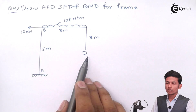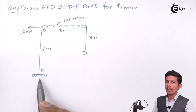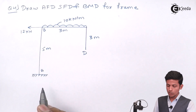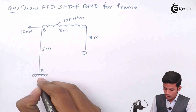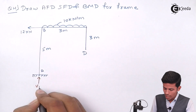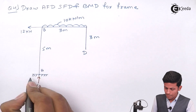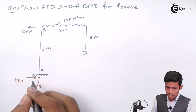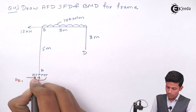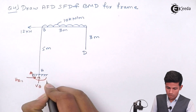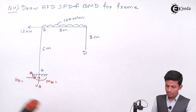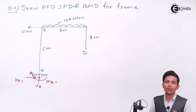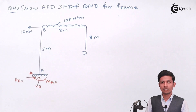First, as you all know, the conditions of equilibrium at a fixed support: we apply ΣFx = 0, ΣFy = 0, and ΣM = 0. First we have to draw the unknowns — VA, HA, and moment MA — and then find out the support reactions.